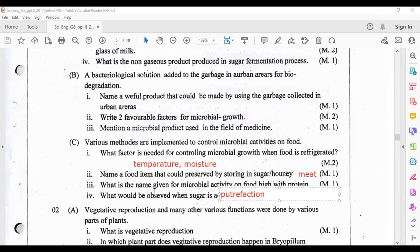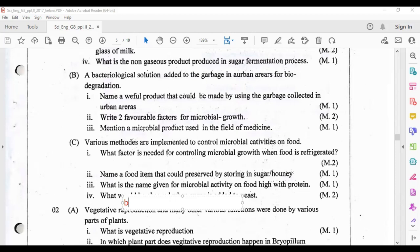Name a food item that could result by storing in sugar or honey - you can write meat. What is the name given for the microbial activity on food high with protein? That is putrefaction. What would be observed when sugar is added to yeast? You have to write the observations: one is become warm, another one is it will bubble, another one is smell the odor of alcohol.